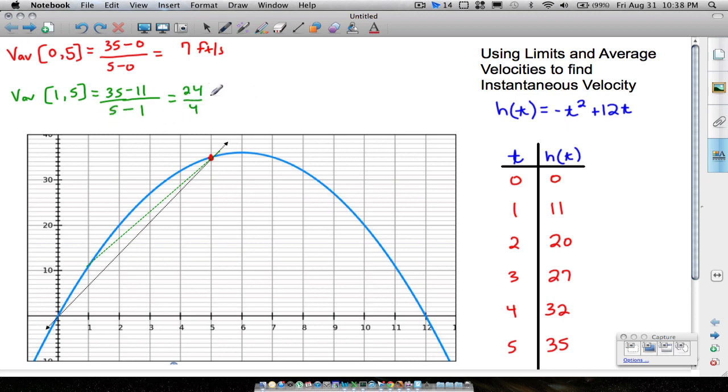35 minus 11 is 24 over 4. Well, look, it did decrease a little bit, 6 feet per second. So it looks like the object's velocity is slowing down. Well, that makes sense, too, because if you launch an object into the air, it is gradually going to slow down until it reaches its maximum. And then it's going to start picking back up speed as it falls back down to earth.